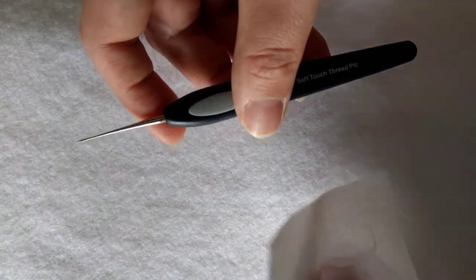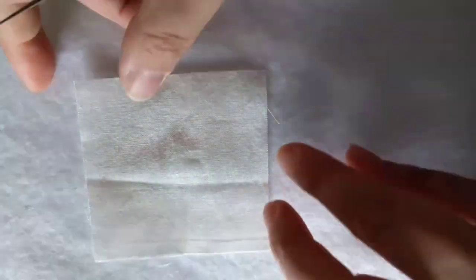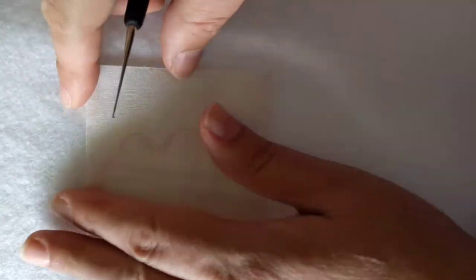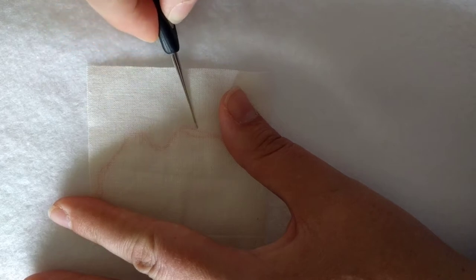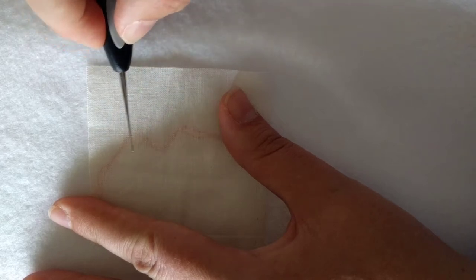What this is for is when you're quilting and you have a piece of thread underneath your top that needs to be removed.